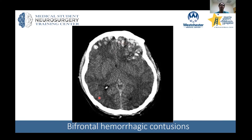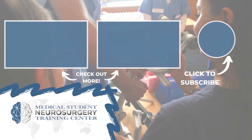Here's an example of a bifrontal contusion. Looking at the counter coup area, we don't really see any injury that has manifested yet in the posterior part of the brain.